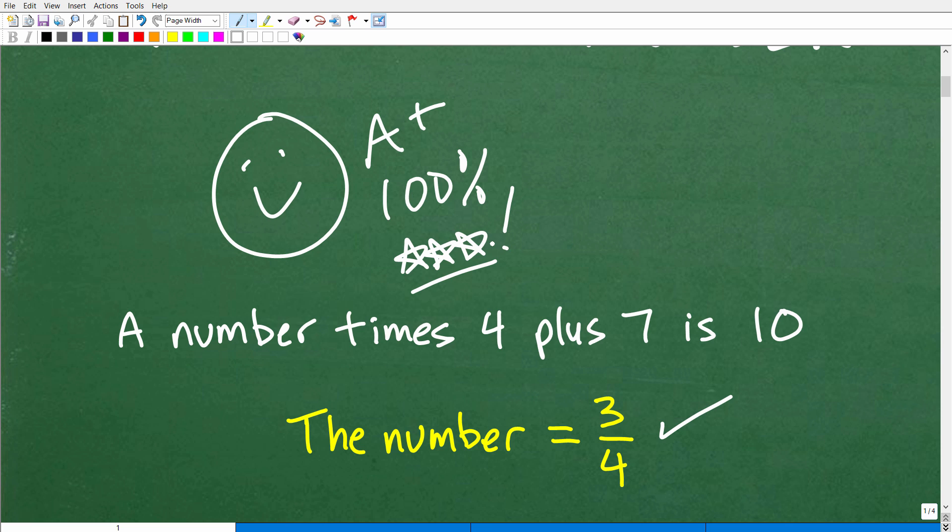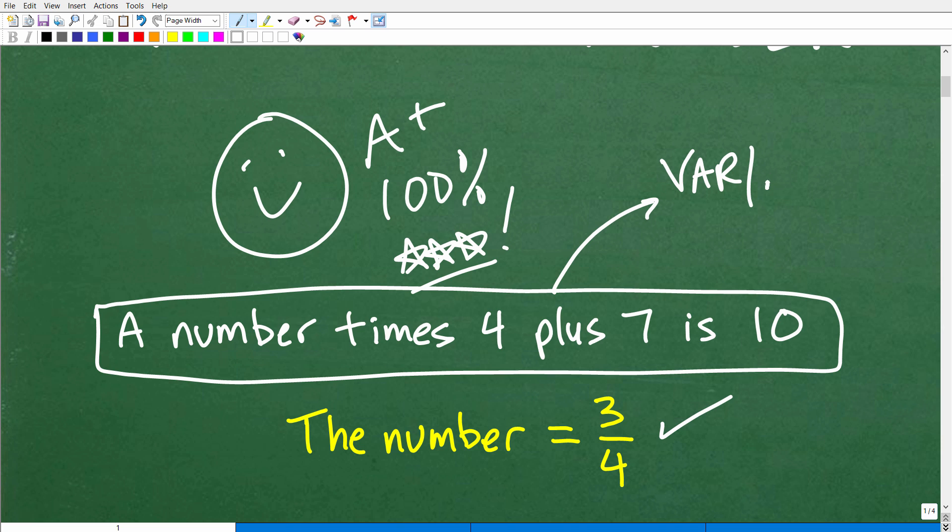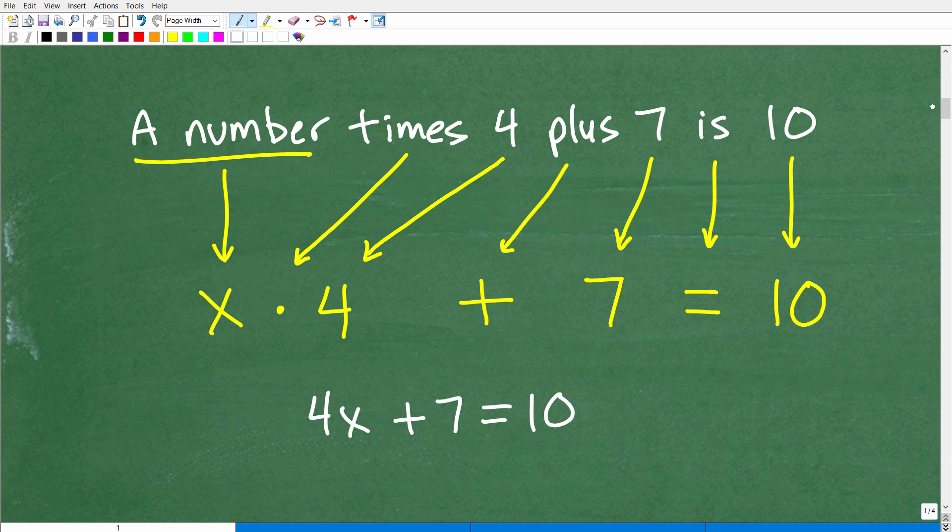And really what we're talking about here is translating a verbal sentence. So right here we're talking about a sentence that we're using words. I mean, there are some numbers in here. But we need to translate this sentence into a variable sentence or an algebraic sentence, i.e., an equation. So that's really what kind of the main essence of this problem is. And then let's go ahead and actually just start getting into it to see what's going on.